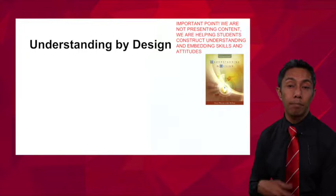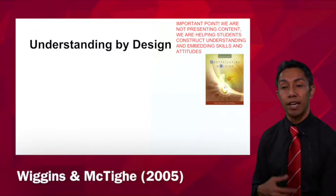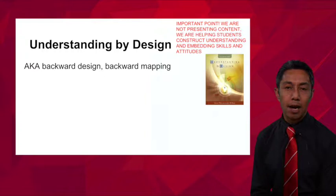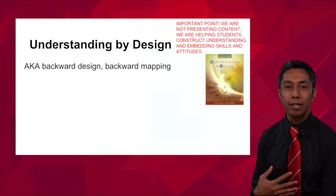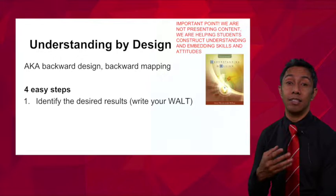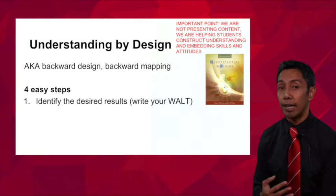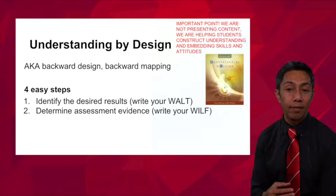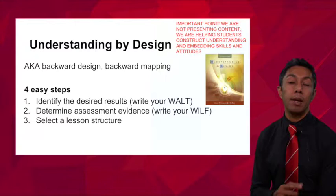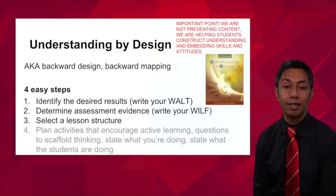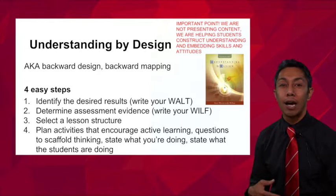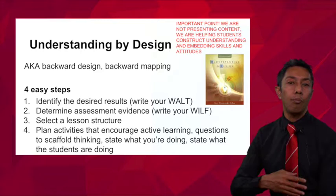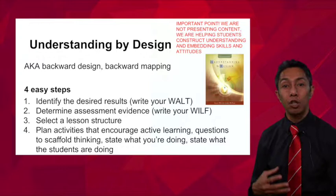One of the key texts that's going to help you plan lessons is by Wiggins and McTighe, which they call Understanding by Design. This is also known as backward designing or backward mapping, and it can be broken down into four steps: identify the desired result — what do you eventually want to achieve out of this lesson, week, or unit of work; determine the assessment evidence; select your lesson structure; and then plan the activities — how you'll encourage active learning, what questions you'll use to scaffold thinking, and what the students will be doing.